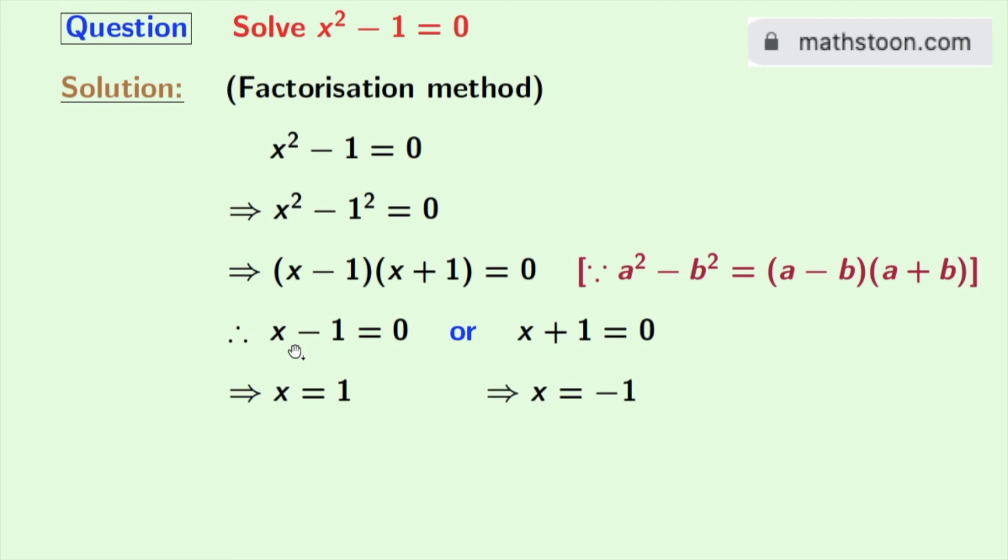So from this we get x = 1, and from this we get x = -1. So x = 1 and -1 are the solutions of the equation x² - 1 = 0.